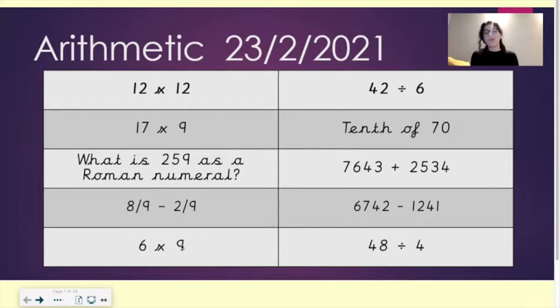the arithmetic is 12 times 12, 17 times 9, what is 259 as a Roman numeral, 8 ninths take away 2 ninths, 6 times 9, 42 divided by 6, tenth of 70, 7,643 plus 2,534, 6,742 take away 1,241, 48 divided by 4.